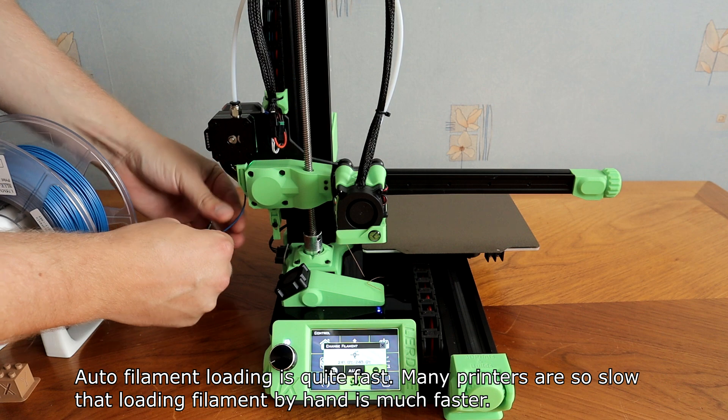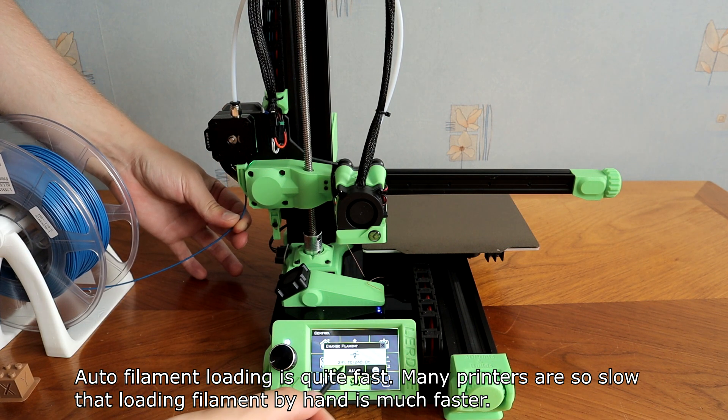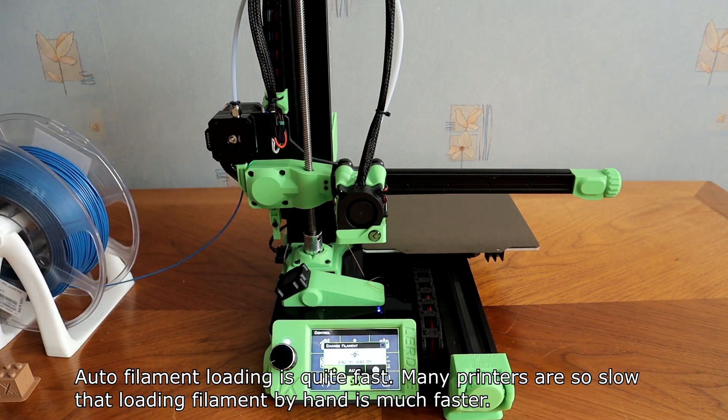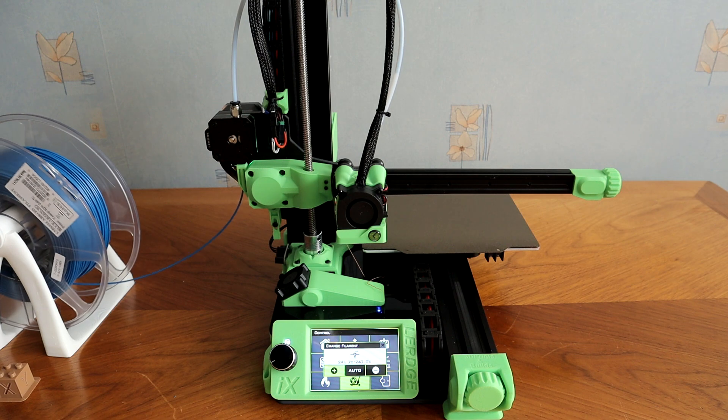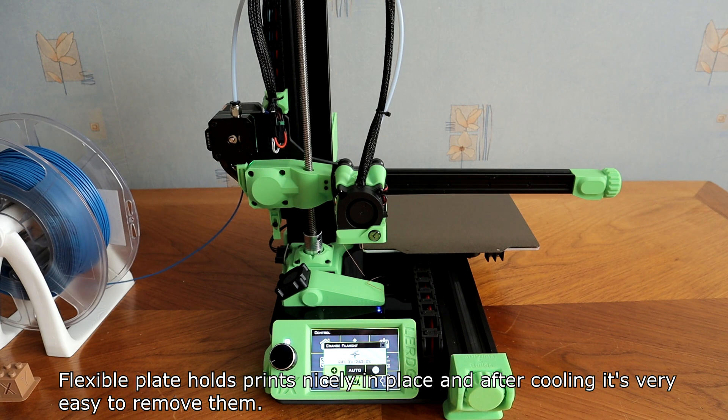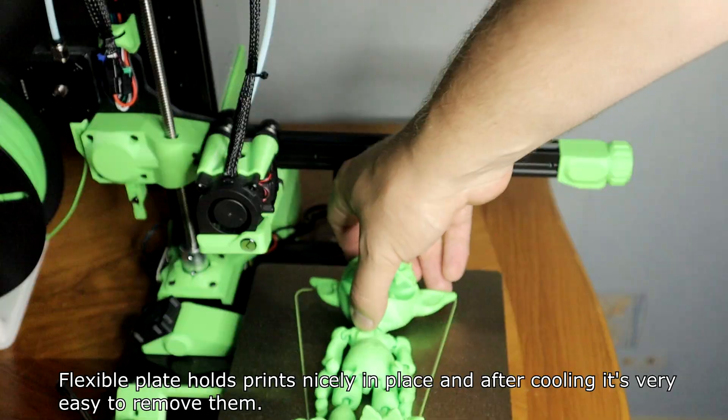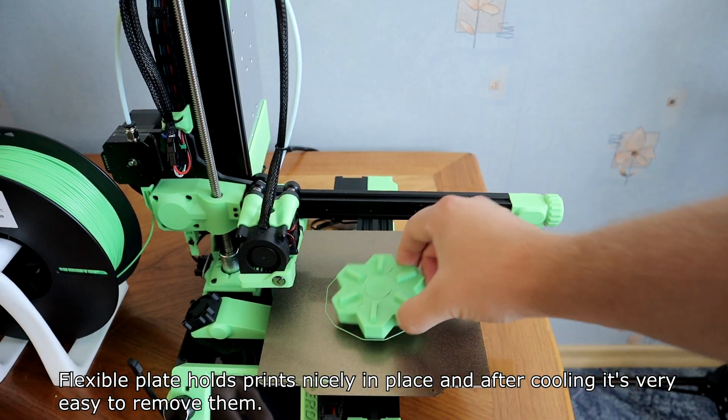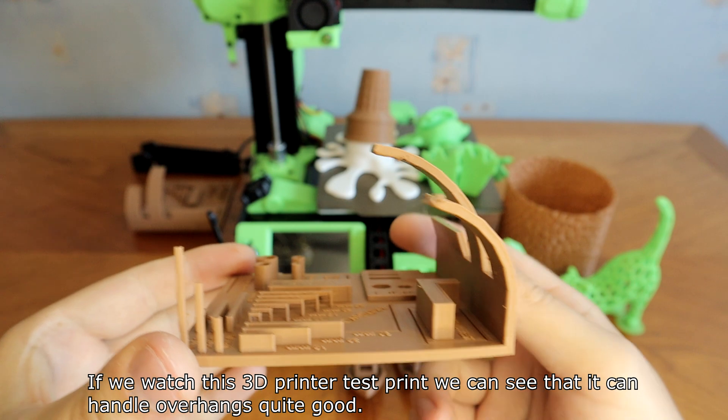Auto filament loading is quite fast. Many printers are so slow that loading filament by hand is much faster. Flexible plate holds prints nicely in place and after cooling it's very easy to remove them.